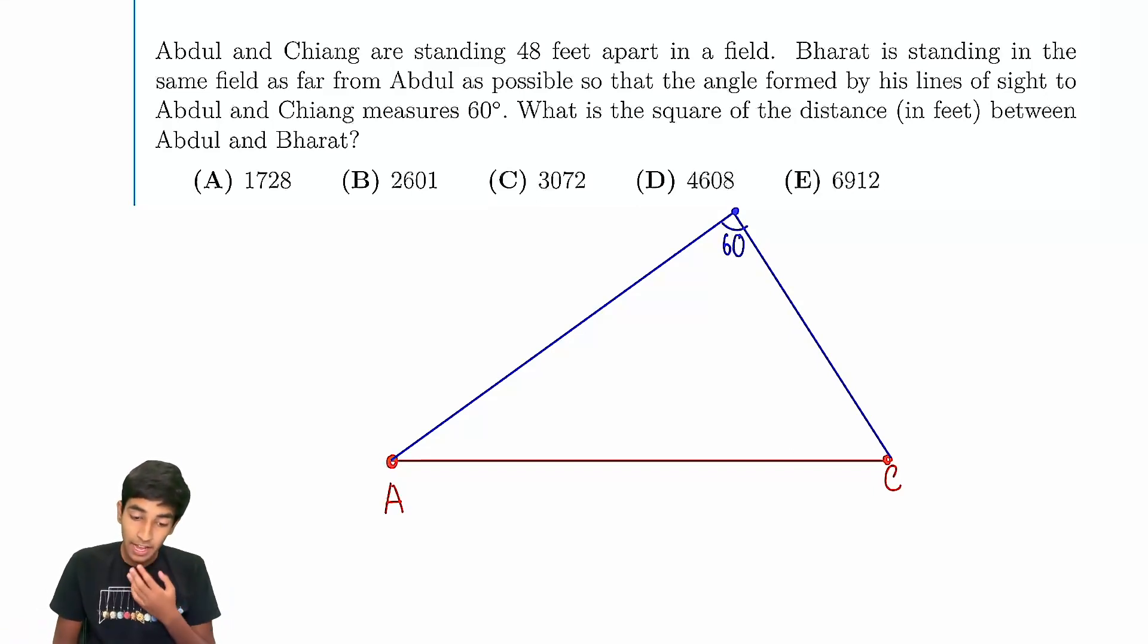We have to find the point where Bharat is maximally away from Abdul and Chang. At that point, what is the square of the distance? Basically, find when B is as far away from A as possible, but it's still 60 degrees.